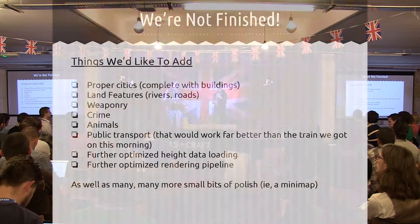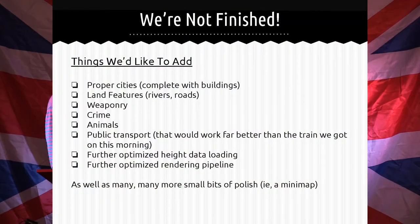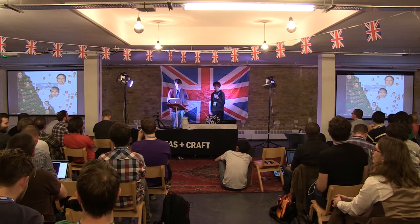We're definitely not finished — this is a prototype, as you can probably tell. So proper cities, land features like the Ordnance Survey one, weaponry, crime, animals — and just make it better so we don't have that massive delay when the client is waiting on a piece of JSON. Optimize data loading and the rendering as well — there's a big blue line that appears down the middle of the screen and no one knows why. That pretty much sums up our expertise there. Thanks for listening.